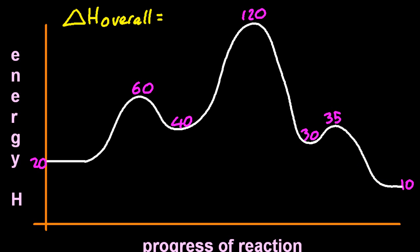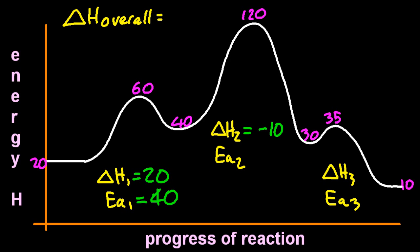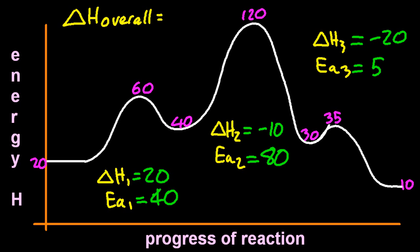And let's look at the three intermediate sets of data. The difference between 20 and 40 is plus 20, so that's delta H1. The height of the bump, the first bump, is 40. The second one, the difference between those kind of intermediary reactants and intermediary products, is minus 10. And the height of the bump, 120 minus 40 is 80. And that is the activation energy. Third one, so this is exo, so make sure it's negative for delta H. And the energy is only 5. The activation energy is only 5.